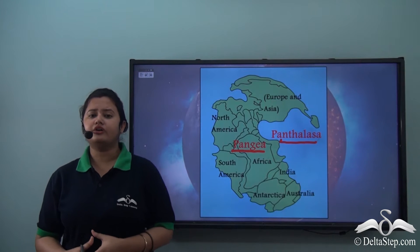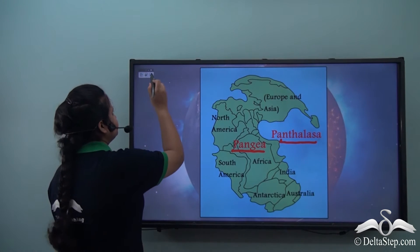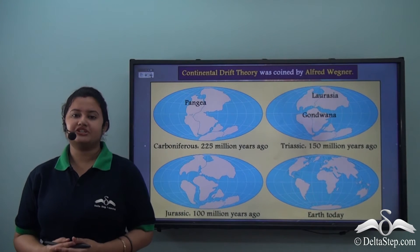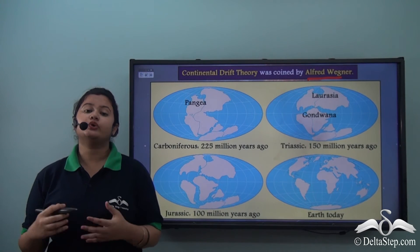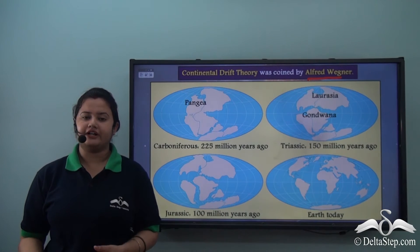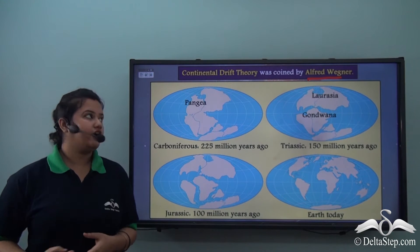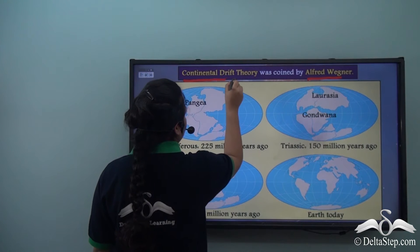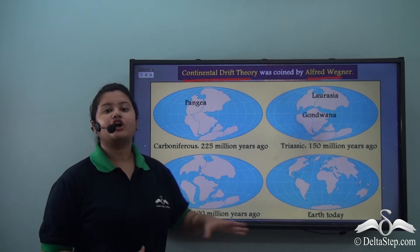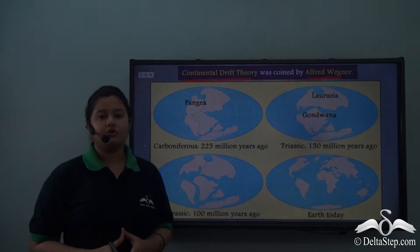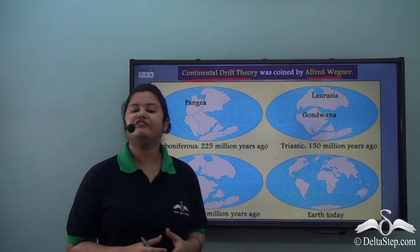Now you must be wondering what caused these continents to drift apart. A German meteorologist named Alfred Wegener formulated a theory to explain how the continents got drifted and how the modern world was formed. The theory is called the continental drift theory. This theory defines how the continents got separated millions of years ago and eventually led to the formation of the new world where we live in today.